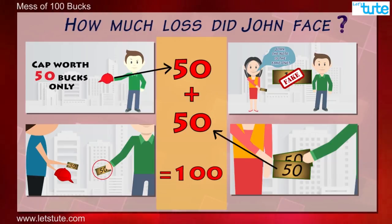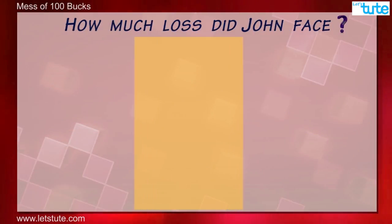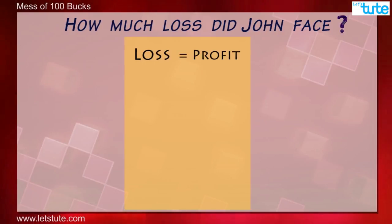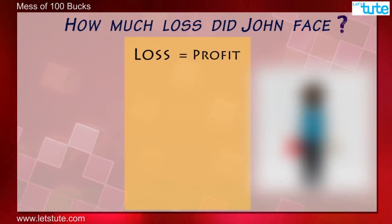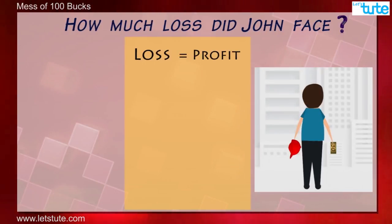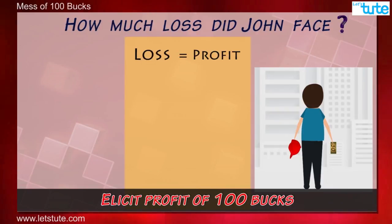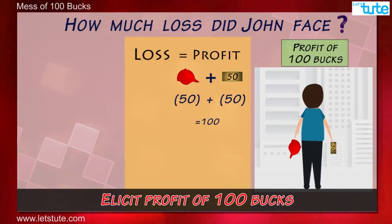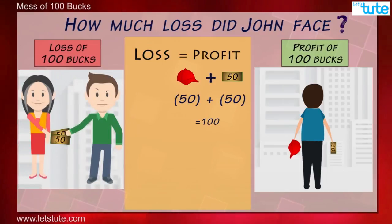Let's cross-check this answer. In simple terms, one's total loss must be equal to another's total profit. Here, the buyer is making an illicit profit of 100 bucks. That must be equal to the total loss of John. Agreed?